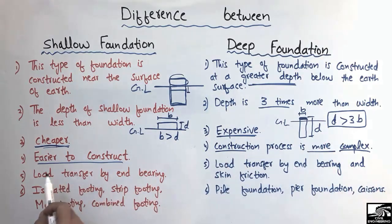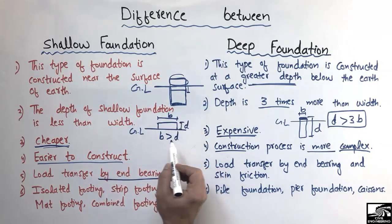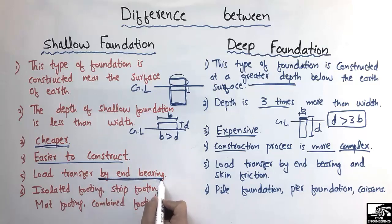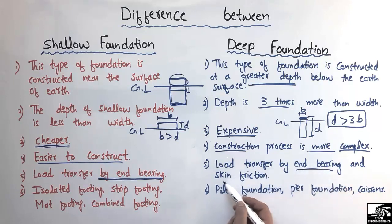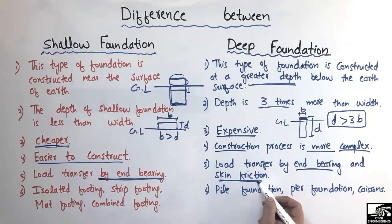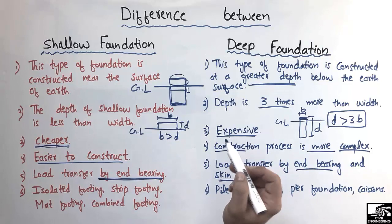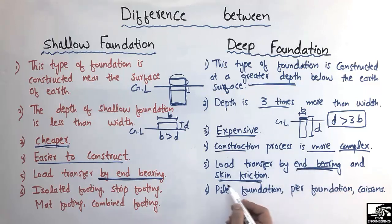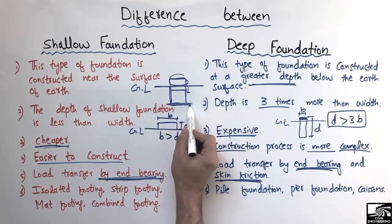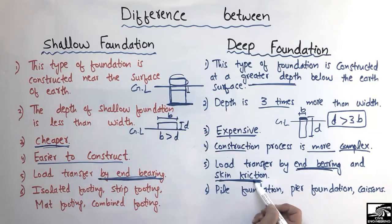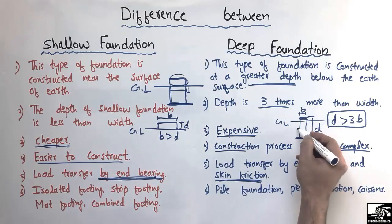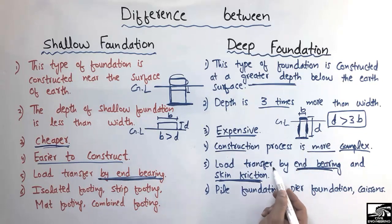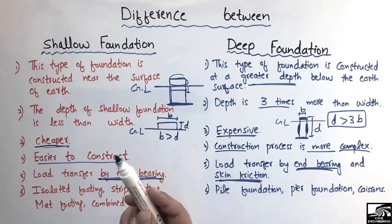The fifth difference is load transfer. In shallow foundation, the load is transferred only by end bearing — the whole load is transferred through the soil directly below the foundation. In deep foundation, the load is transferred by both end bearing and skin friction. Skin friction means the friction force between the soil and the pile also helps carry the load. So there are two mechanisms for load transfer in deep foundation: end bearing at the bottom and skin friction along the sides.